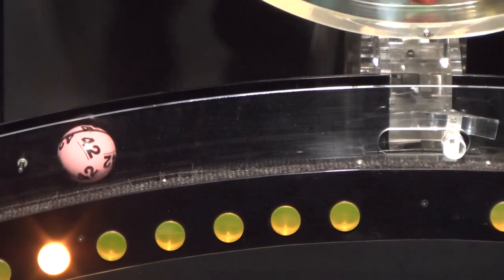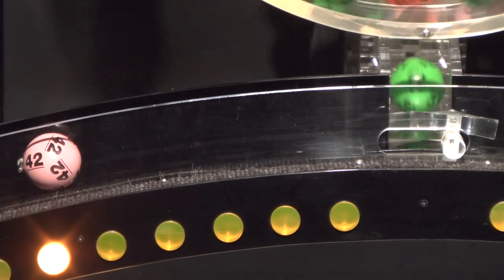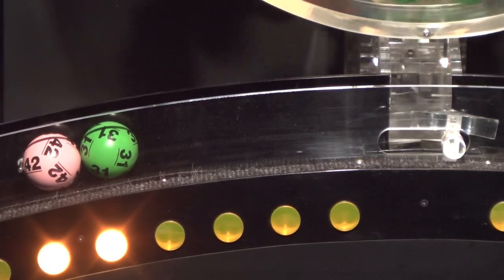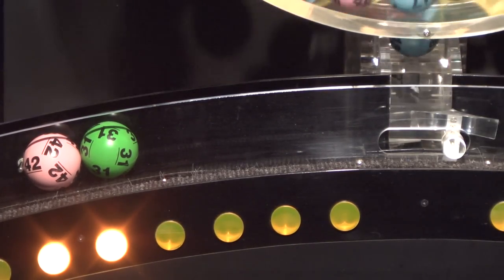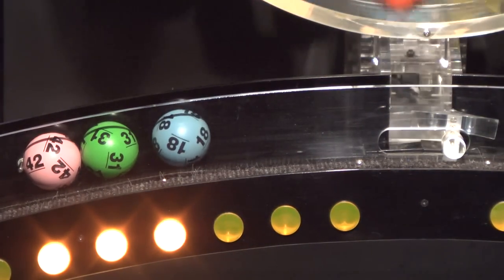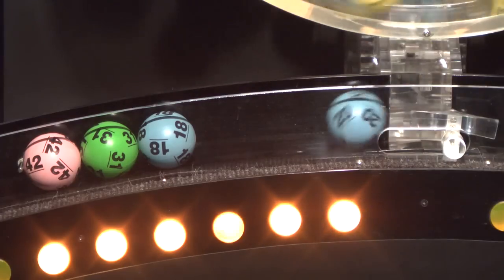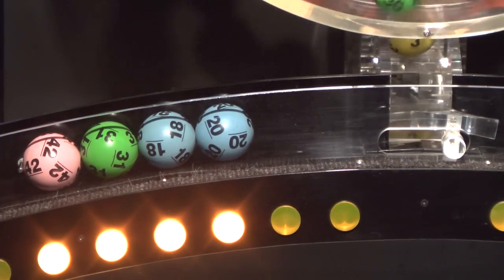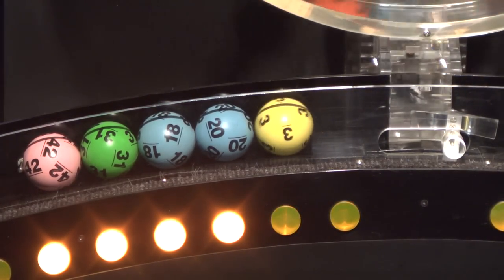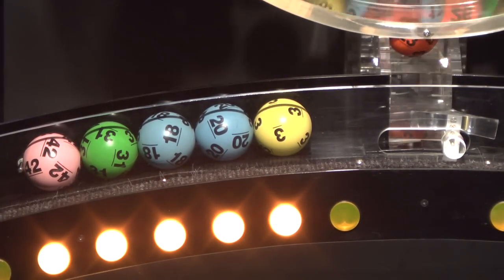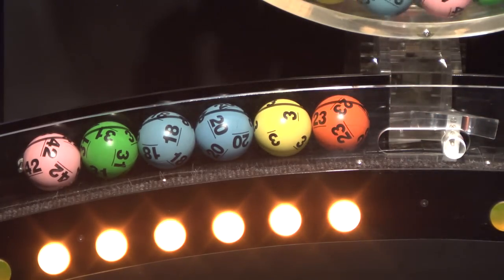Our first number up is number 42. After that we have number 31. And here comes number 18. After that is 20. Up next is 3. And the final ball in this sequence is number 23.